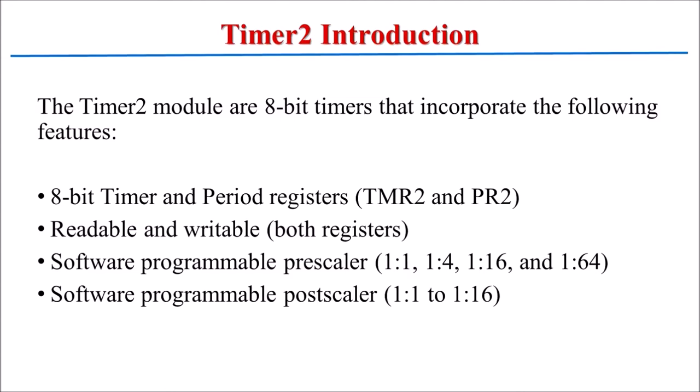A post-scaler option is also available in this timer. After the timer block, you can divide the frequency by 1 up to 1:16. Timer 2 will generate an interrupt signal when the TMR2 register count matches the PR2 register. Timer 2 is generally used to generate a PWM signal in CCP mode, so we use Timer 0 to generate a simple delay circuit.